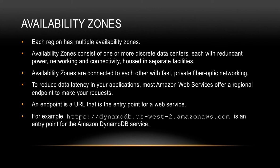To reduce data latency in your applications, most Amazon web services offer a regional endpoint to make your request. An endpoint is a URL that is the entry point for a web service. I have an example on the screen as well: https://dynamodb.us-west-2.amazonaws.com — this is an example entry point for the Amazon DynamoDB service.